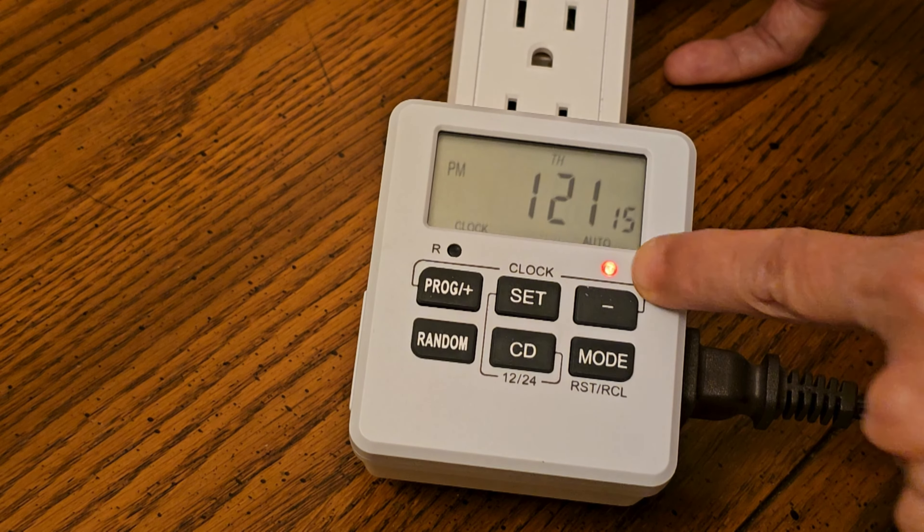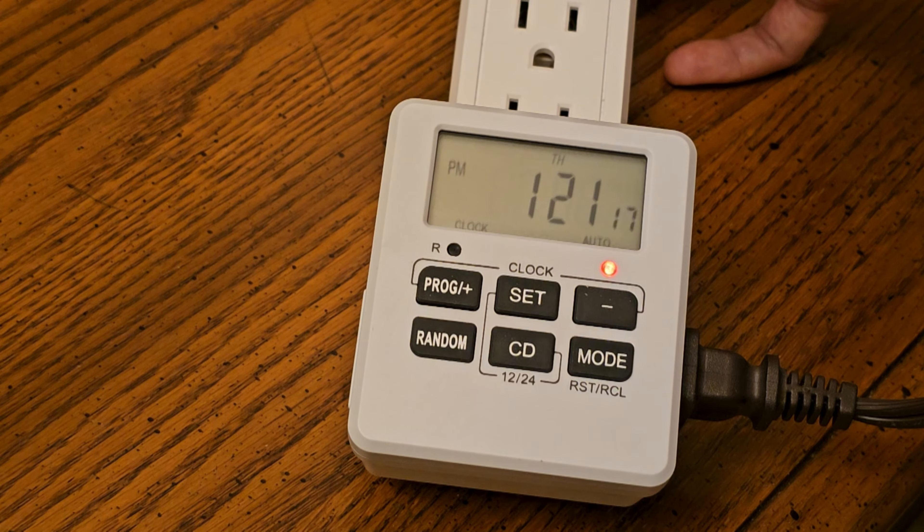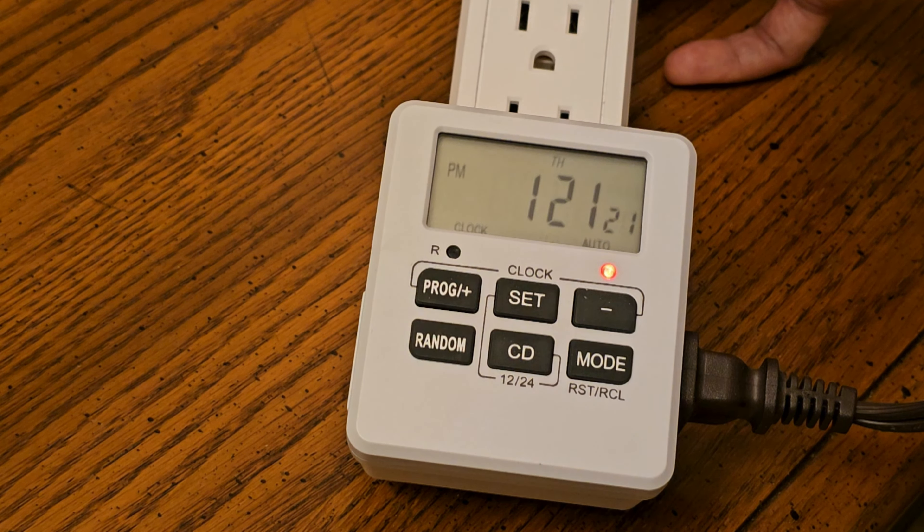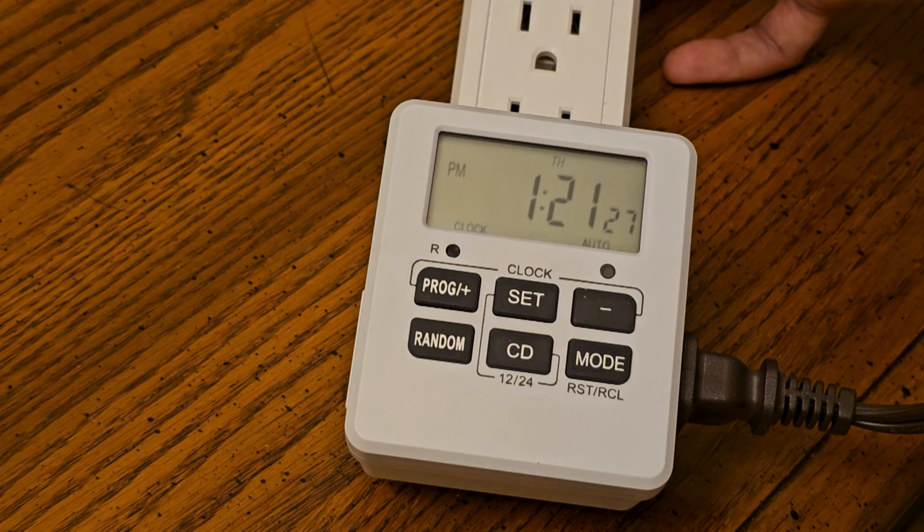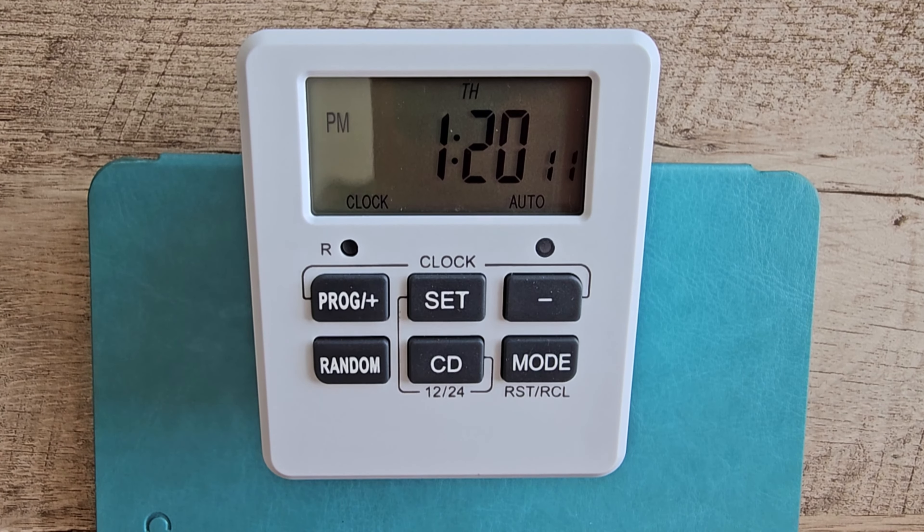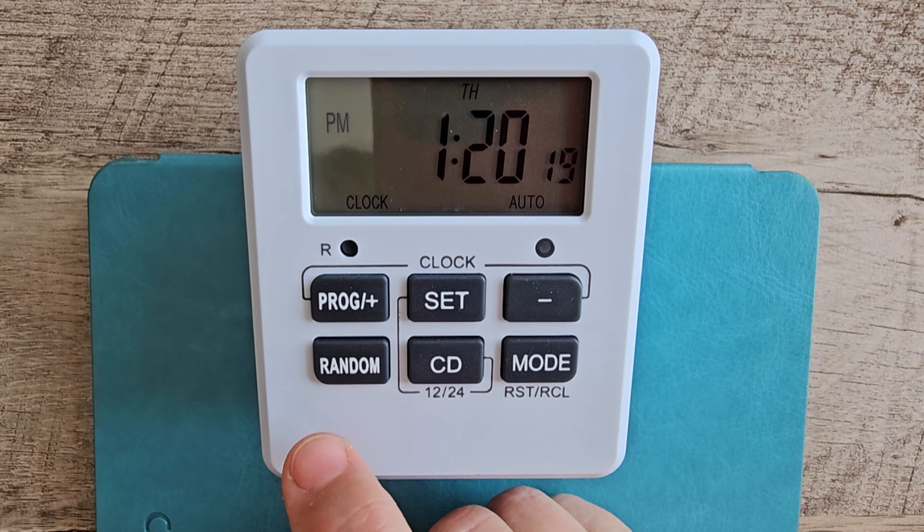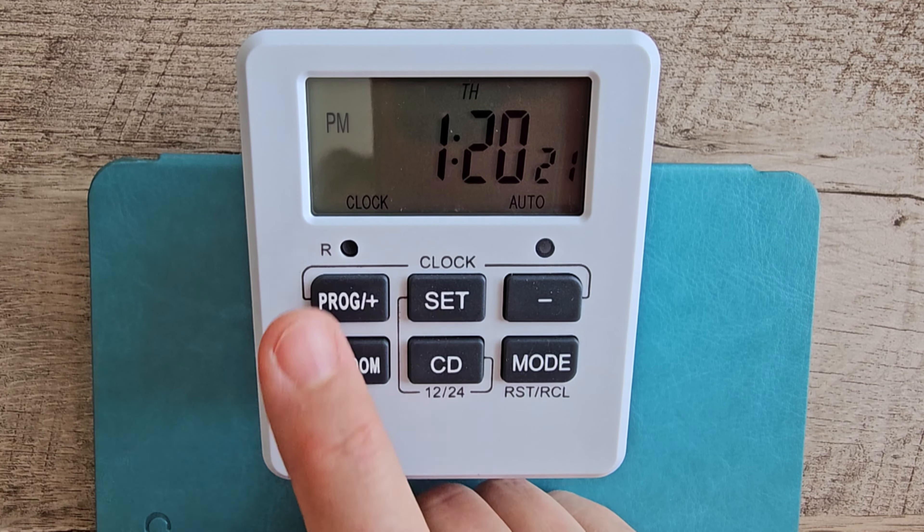I have the timer plugged into a power strip and I've plugged the desk lamp into the timer. Make sure the mode is set to auto. Make sure random is off. And press CD. See, my lamp came on and this little red LED light comes on to show you the timer is actually in use. So I had set my countdown for one hour. My lamp's going to stay on for one hour or until I press CD.